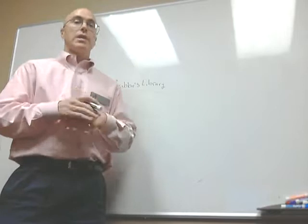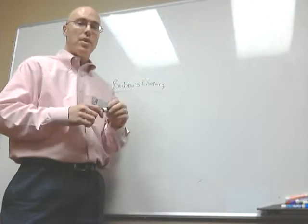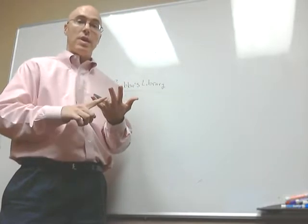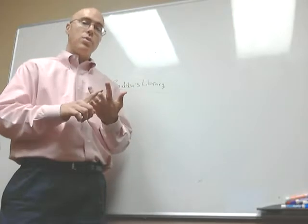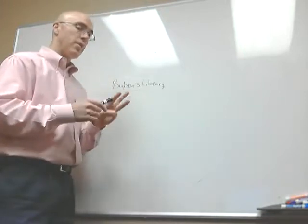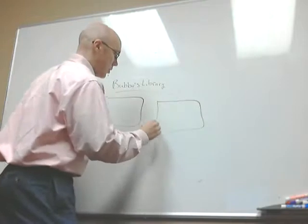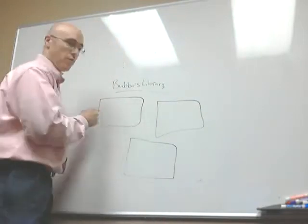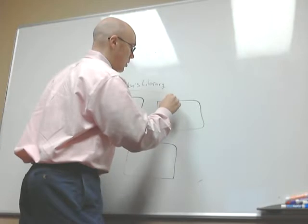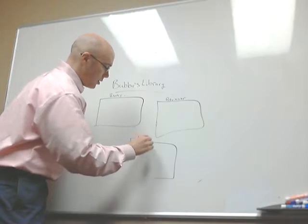The next part we're going to work on is planning out how we're going to structure the tables for our fictitious example library, Bubba's Library. We want to have a place to store information about the books, a place to store information about the reviewers, and a place to store information about the actual review itself. That gives us three tables: table one is the Books table, table two is the Reviewer table, and table three is the Reviews table.